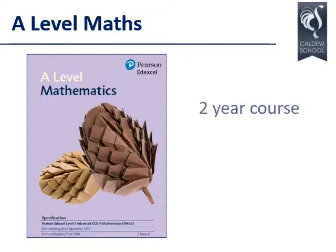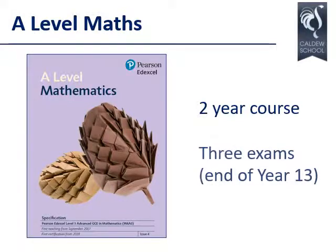A-level maths is a two-year course. We follow the Edexcel specification. The A-level course is examined at the end of year 13. There are three exams: two pure maths papers and one that covers statistics and mechanics. Each exam is two hours. There is no coursework.